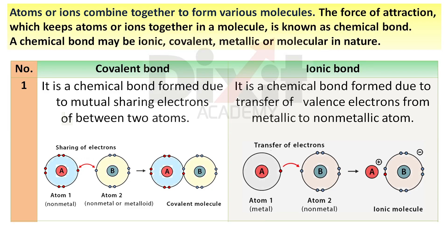Atoms or ions combine together to form various molecules. The force of attraction which keeps atoms or ions together in a molecule is known as a chemical bond. A chemical bond may be ionic, covalent, metallic, or molecular in nature. Today we are going to study and distinguish between covalent bond and ionic bond.